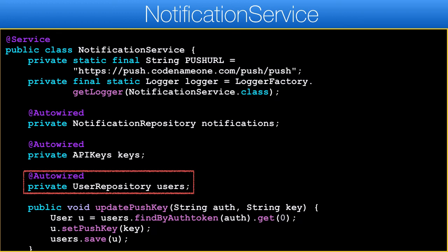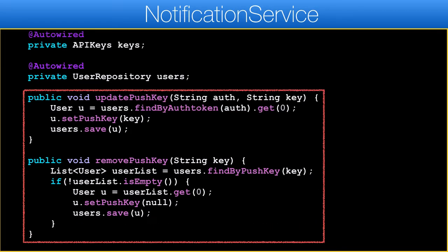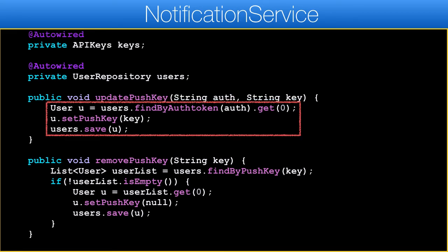We need to inject the user repository, as we need to find the user there. The first step is trivial — it's about mapping the push key to the service class, which is exactly what we do here. On push registration, we invoke this method to update the push key in the user object. If the push server indicates that a push key is invalid or expired, we delete that key. A fresh key will be created the next time the user runs the app. The second method is internal to the server and isn't exposed as a web service, but the former method is.